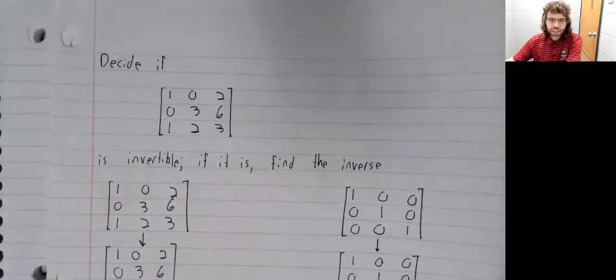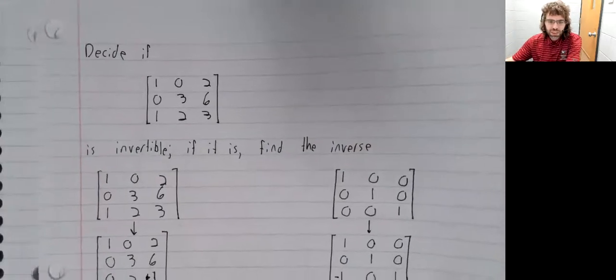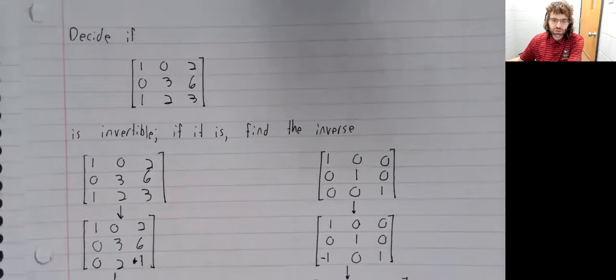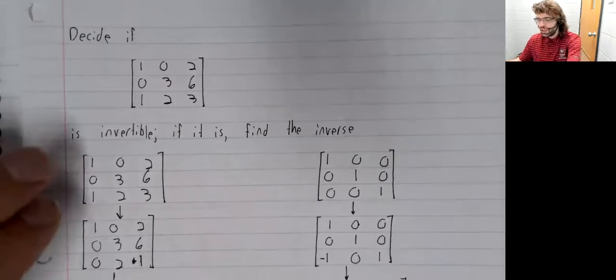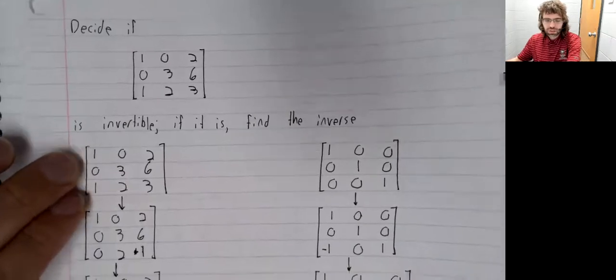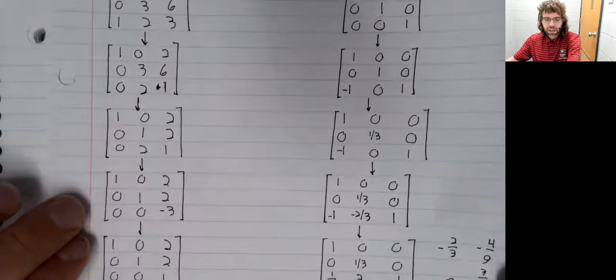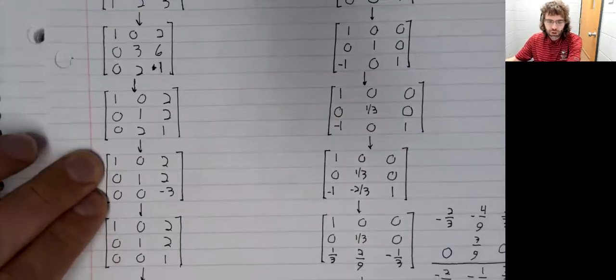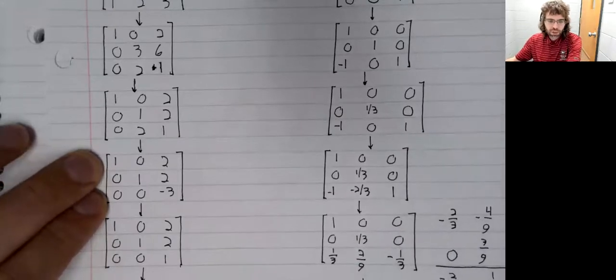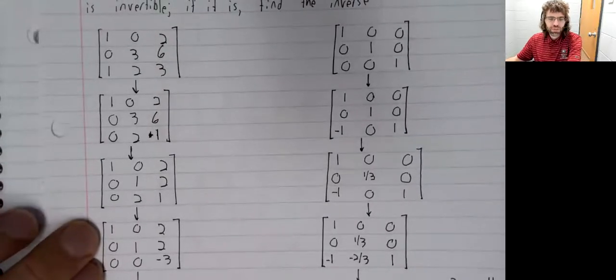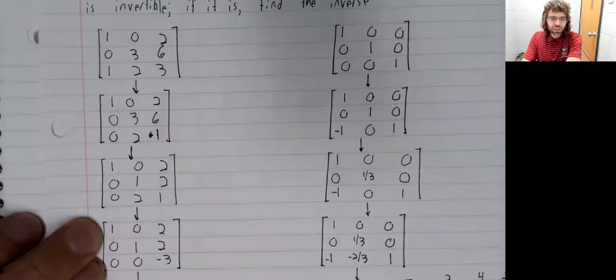But let's look again at this example we did, where we found the inverse of a matrix. So, first of all, we took this matrix and put it into row echelon form. And that took a fair number of steps, as you can see.